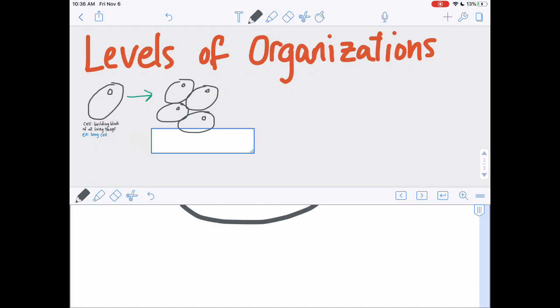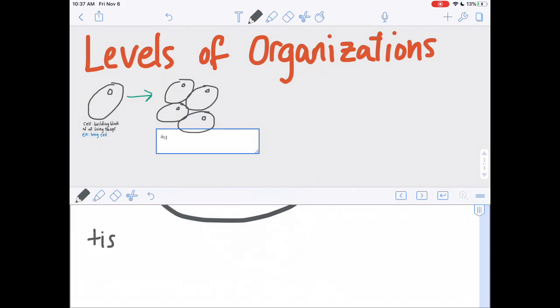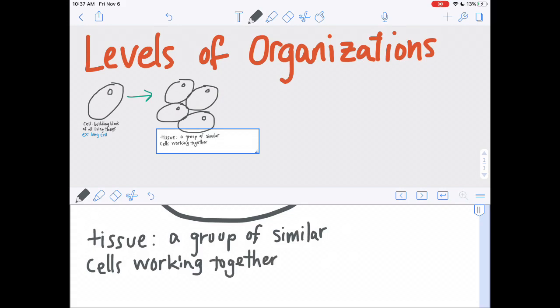This is an example of tissue. And again this isn't like a tissue like what you blow your nose with. But a tissue is a group of similar cells working together to perform a specific function.